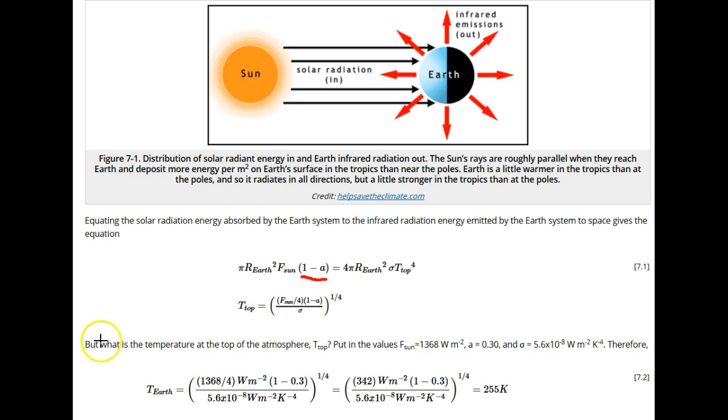On the other hand, Earth radiates in all directions, so assuming Earth's emissivity is 1, then Earth's irradiance is in watts per meter squared, and if we multiply by Earth's surface area...